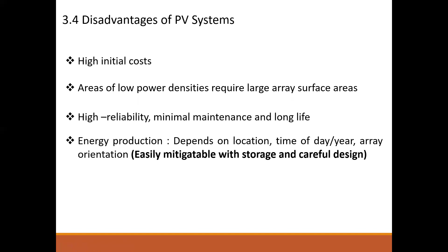On the other hand, a solar PV system has high initial costs. What you invest at the start is viewed as higher compared to other types of generation — for example, a 1 MW solar system versus a 1 MW hydro system, where solar carries higher upfront cost. Additionally, as we will see when looking at global horizontal radiation and direct normal radiation, areas of low power density require large array surface areas to produce the same energy as areas with higher power density.